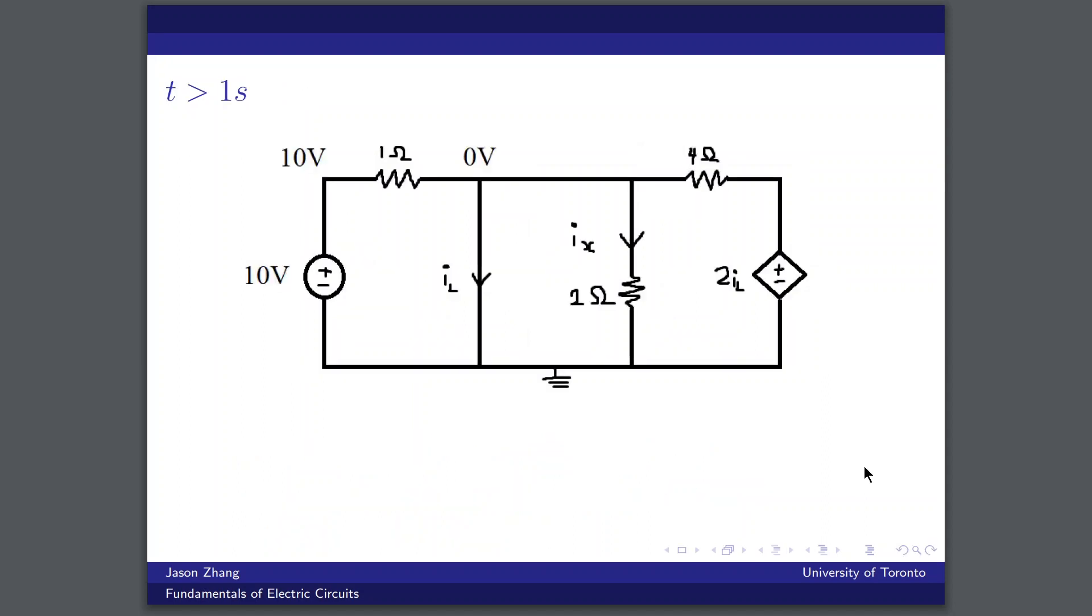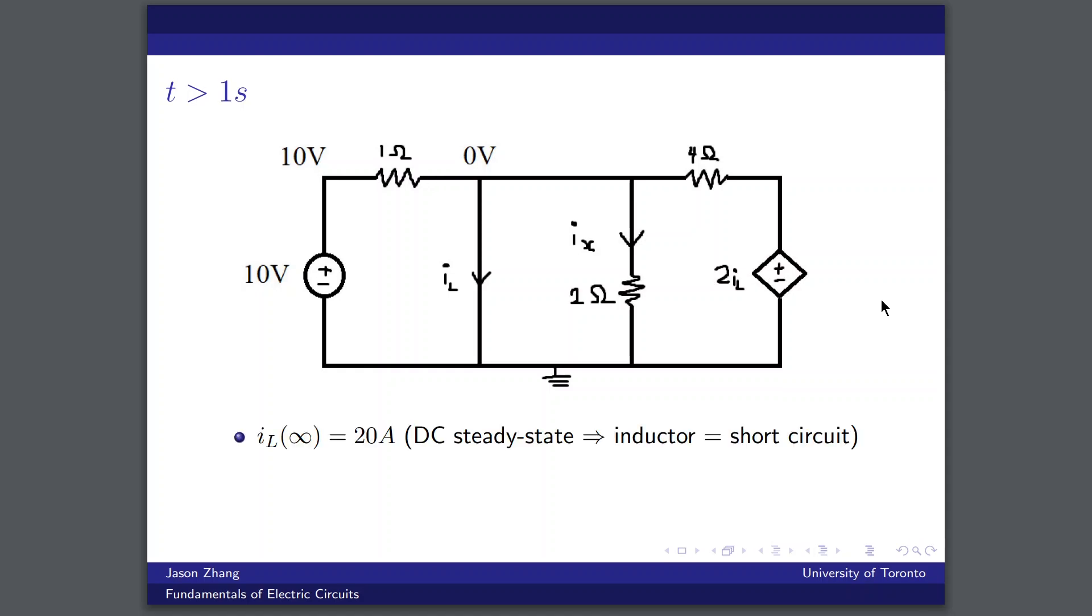So for t greater than one second, the switch is closed again. So we again have these three separate branches of our circuit. And we should note that as t approaches infinity, the current going through iL will be 20 amps. Again, this is just like t less than zero seconds, because we'll have a steady state current. And so the inductor will become a short circuit.